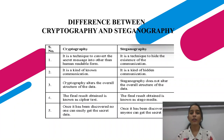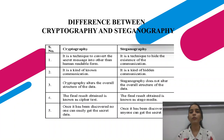In cryptography, once the encryption is discovered it is not easy for anyone to get the secret message. But in steganography, once it has been discovered, anyone can get the secret data. However, it is very difficult for an eavesdropper to even know that there is some hidden data being sent in steganography.